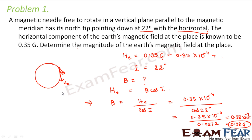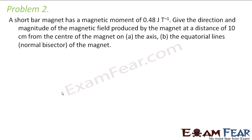To solve problems related to earth's magnetism and the magnetic elements of the Earth, the best thing is to draw a rough diagram and understand what values are given in the problem, because most of the time people have trouble understanding the question. Now let us look at the next problem: a short bar magnet has a magnetic moment of 0.48 joule per tesla.